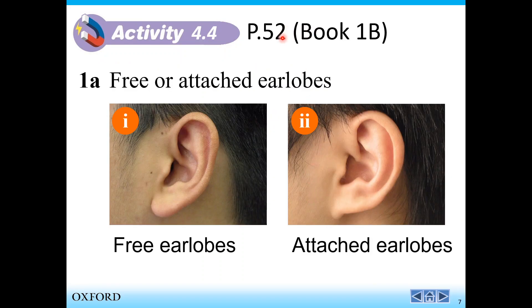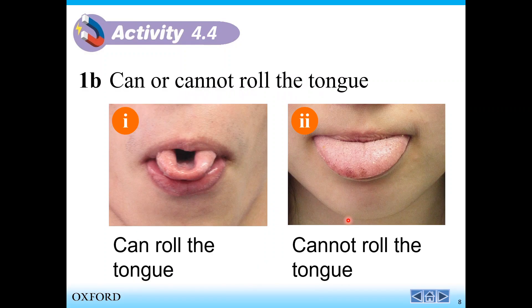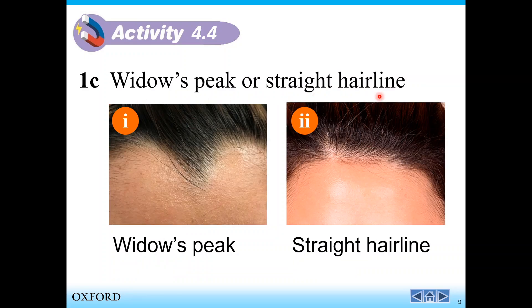Turn to your book, page 52. Let's see the different traits you have. You see this photo — this is the free ear lobe and the attached ear lobe. What do you have, attached or free? Answer in the book. And the rolling of the tongue — can your tongue roll or not? Answer in the book. And the hairline — look in a mirror. Do you have the widow's peak or the straight hairline?